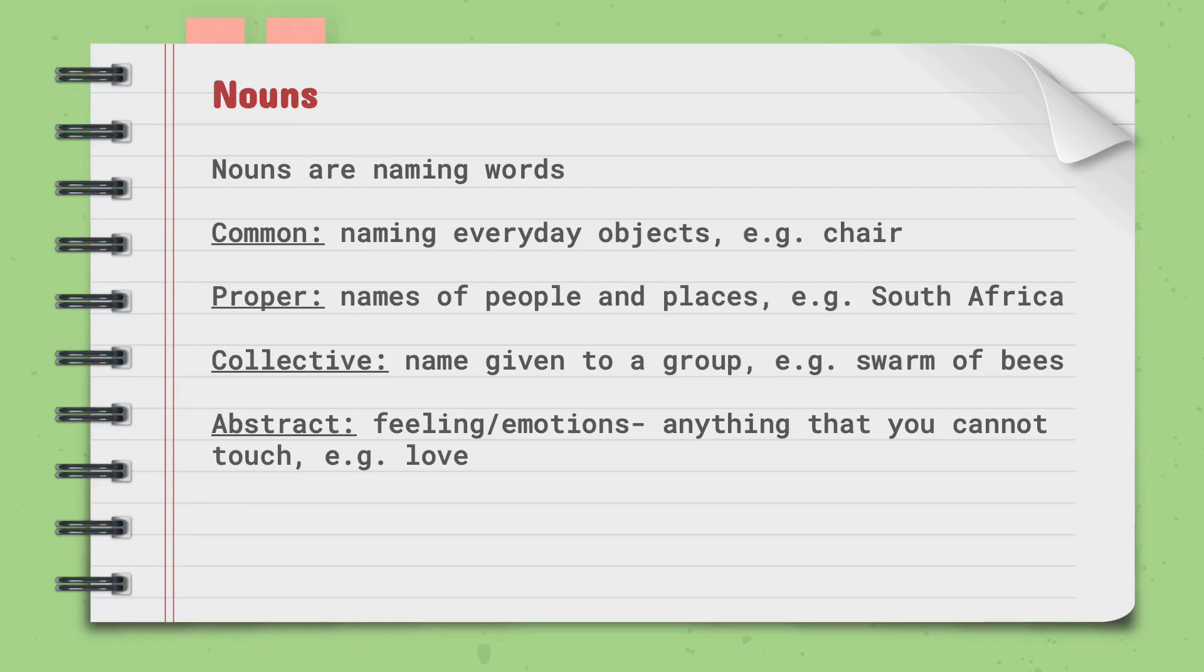A proper noun is the name of people or places, for example, South Africa. Collective nouns is the name given to a group, for example, a swarm of bees.